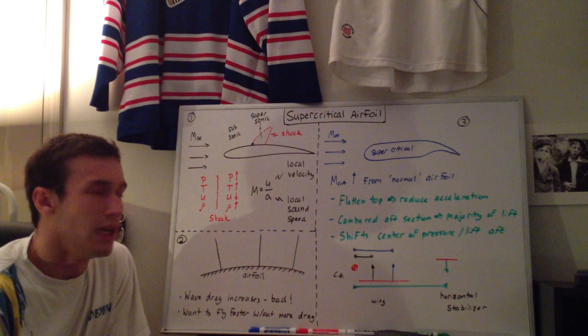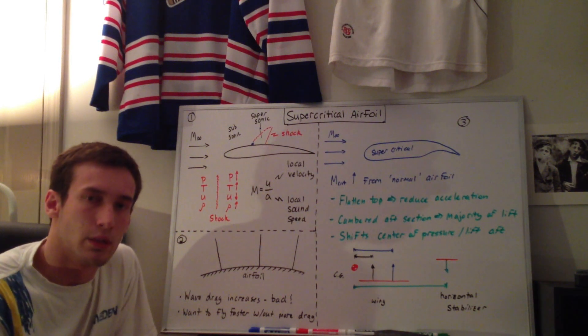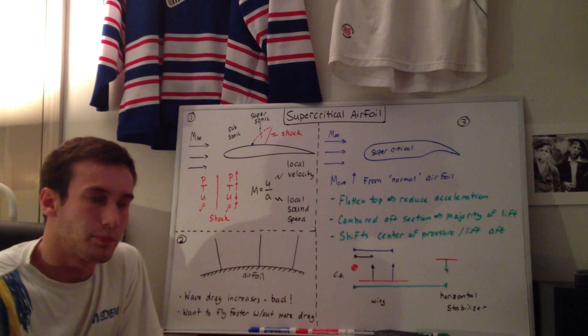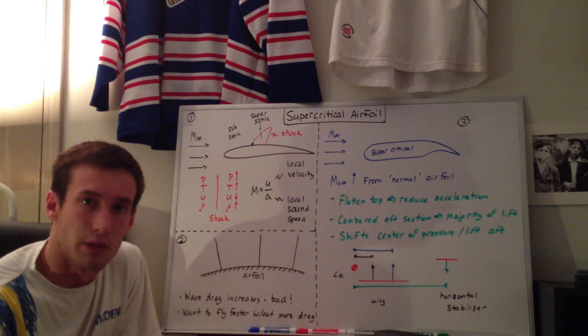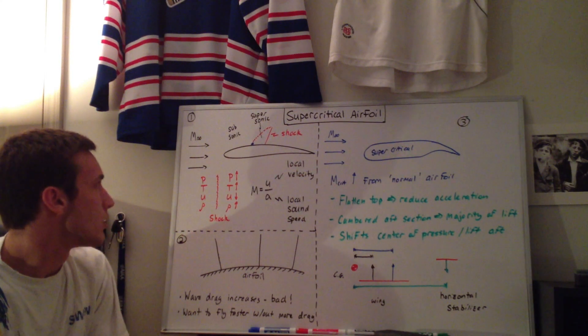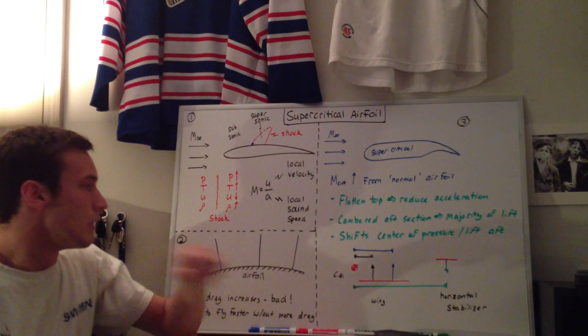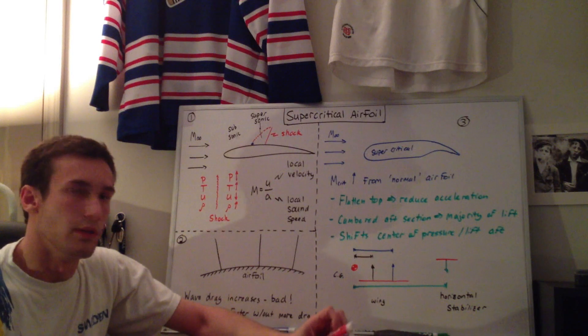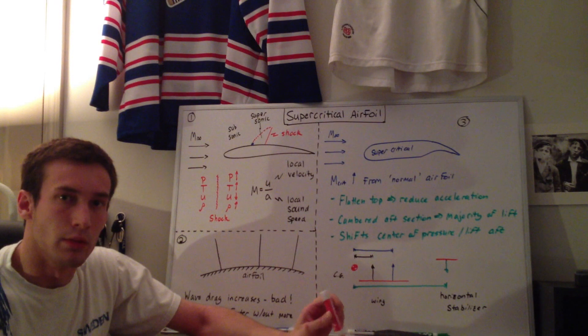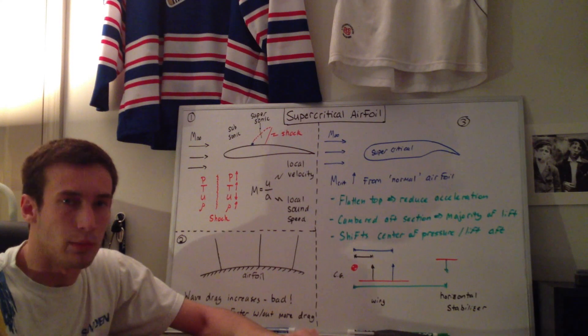So we're talking about commercial planes that are flying at subsonic speeds. Your general commercial plane will be flying at speeds that are close to the speed of sound, or Mach 1, but not quite there. So the Mach number is defined as U over A, which is the local velocity over the local speed of sound. So if we're flying half the speed of sound, the Mach number is going to be 0.5. Most commercial jets fly like Mach 0.75 to Mach 0.8, something like that.